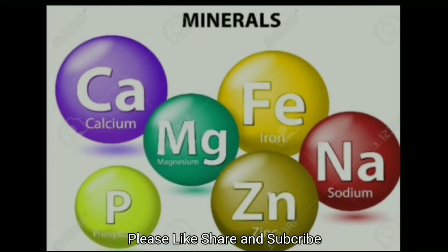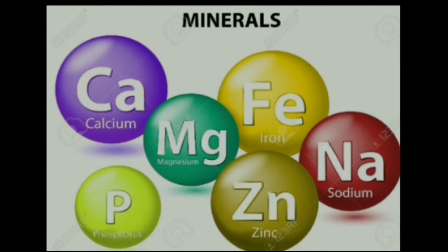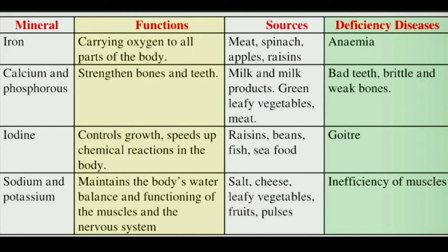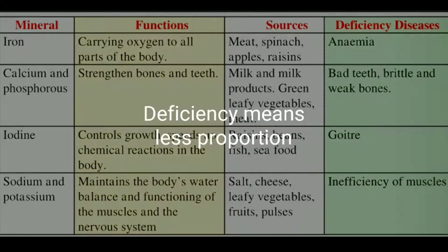The body needs several inorganic substances called minerals. The table below gives examples of some minerals and provides information about their functions in the body, the various sources of the minerals, as well as the diseases caused by their deficiency. Deficiency means less proportion.